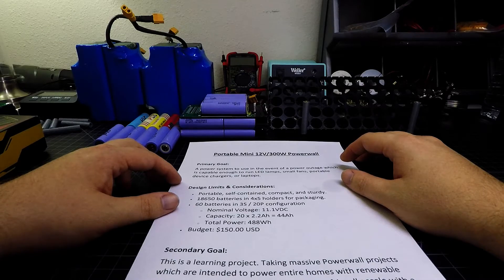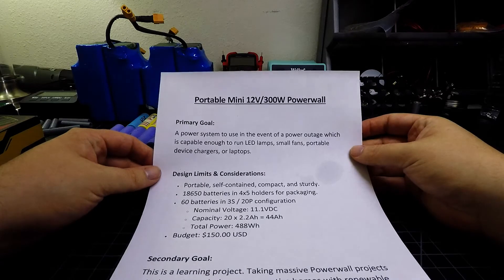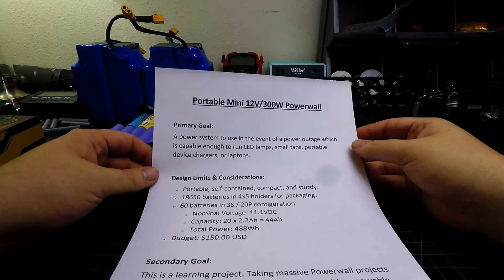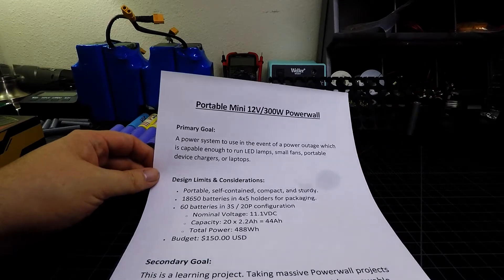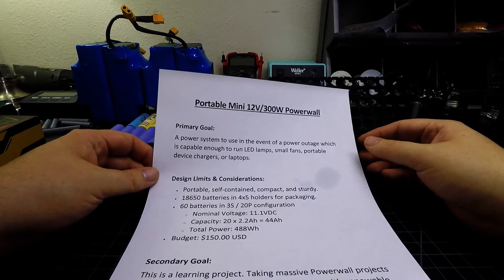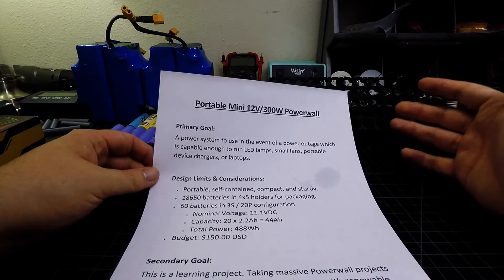This project is going to be a portable mini power wall, and this will be a 12 volt system that's intended to run on a 300 watt power supply or inverter, and the primary goal of this system is being able to use it in the event of a power outage.